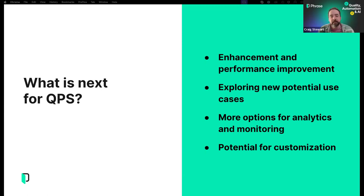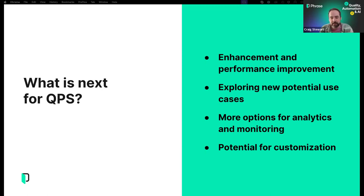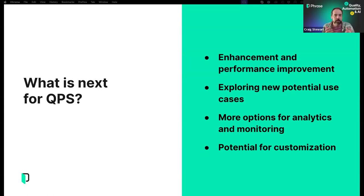We're also interested in providing more options for analytics and monitoring. The data generated by QPS is available in aggregate through the Snowflake connector, but we want to go further — providing meaningful metrics that aggregate in different dimensions and tackle interesting use cases and customer expectations. In the future, we're investigating how we tackle MT evaluation versus human evaluation, the subjective expectations of each customer, and we're very interested in opportunities for customization of the score — adapting it to a particular use case, domain, customer, or content type.